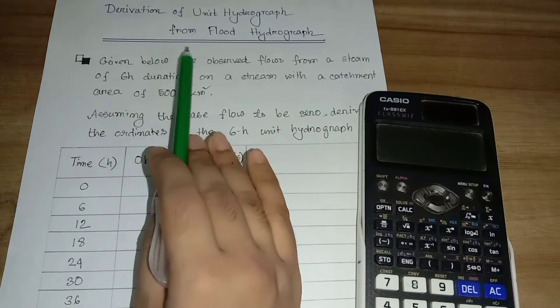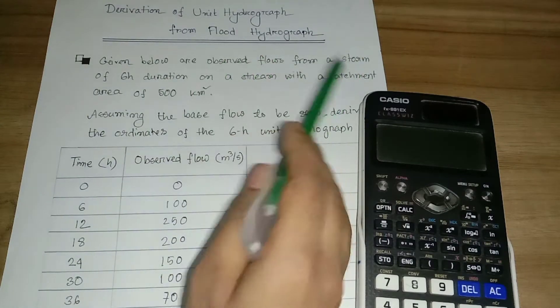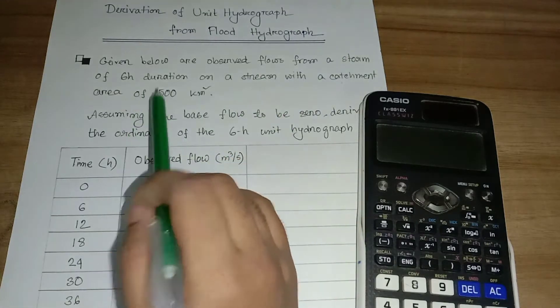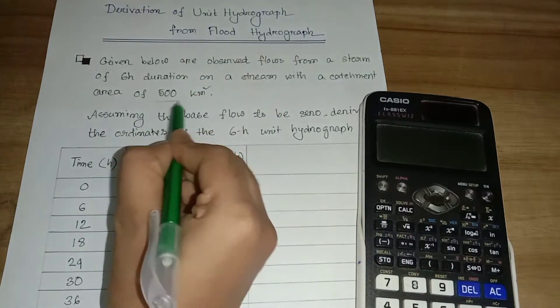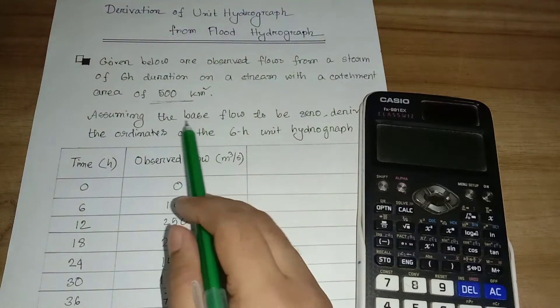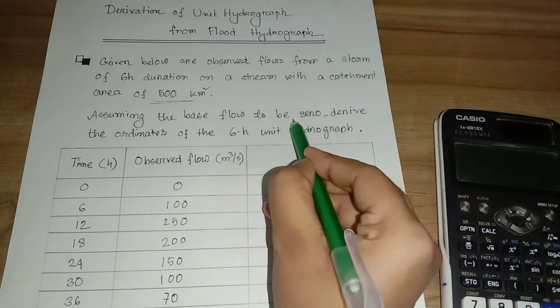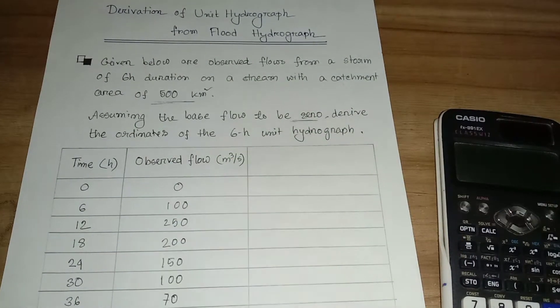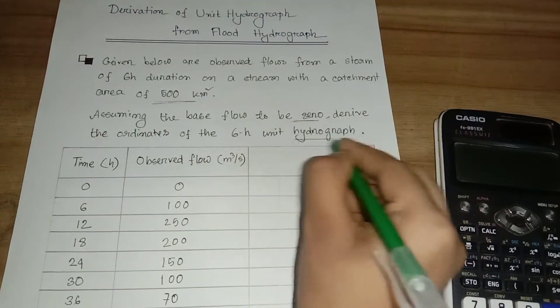Given below are observed flows from a storm of 6 hour duration on a stream with a catchment area of 500 km². And assuming the base flow to be zero, derive the ordinates of the 6 hour unit hydrograph.